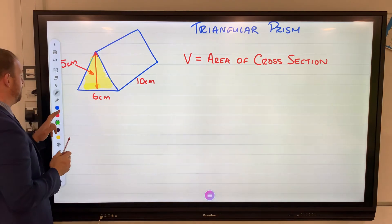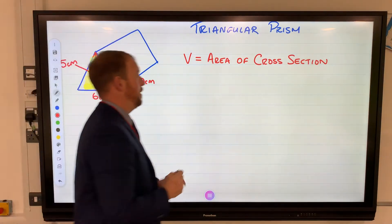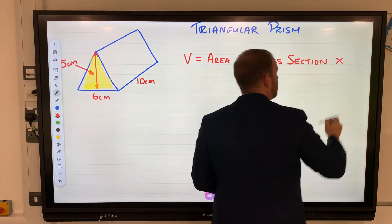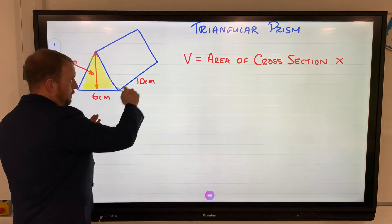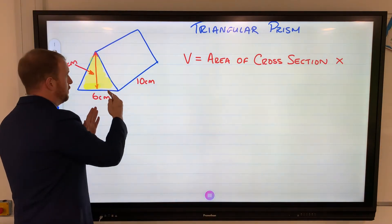We use a highlighter, the area of that, and then multiply that by the height, the depth, how far it goes back. For this one I'm going to use depth.